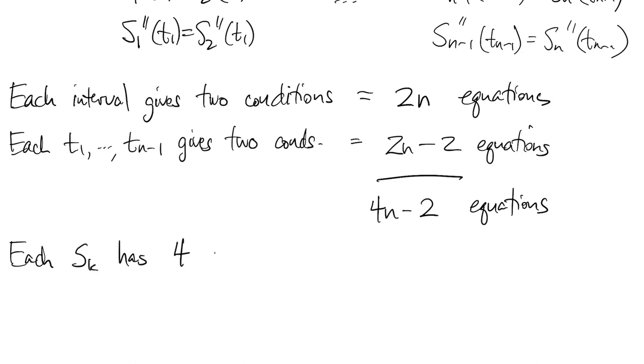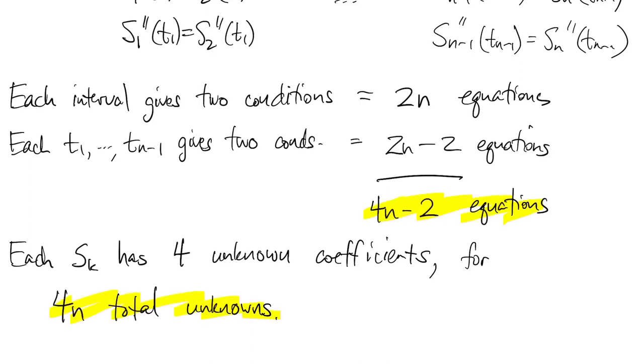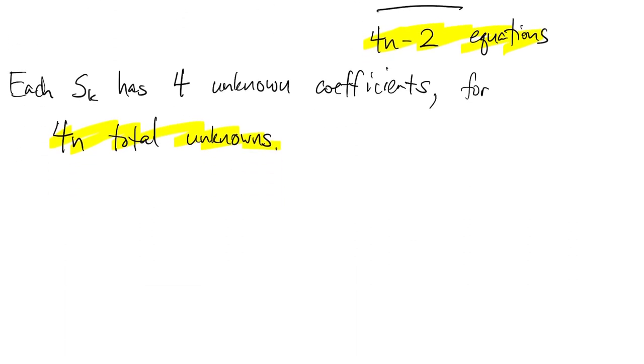Now, each of these sks is a cubic polynomial that's defined by four coefficients, for a grand total of 4n coefficients that we have to determine. Hence, we are two equations shy of a complete set and a unique solution for the interpolant.